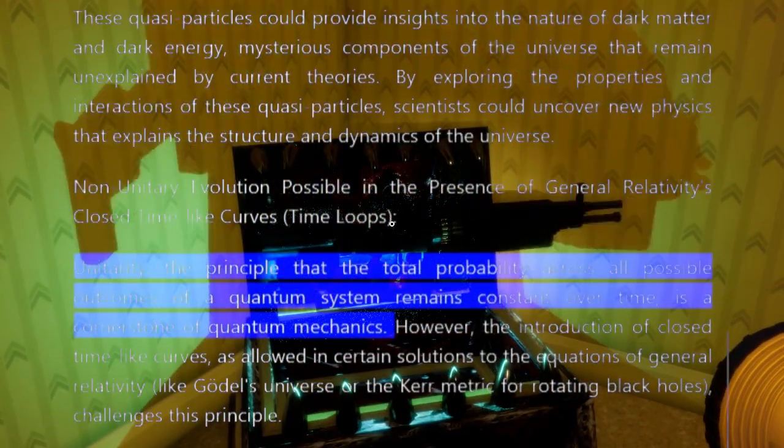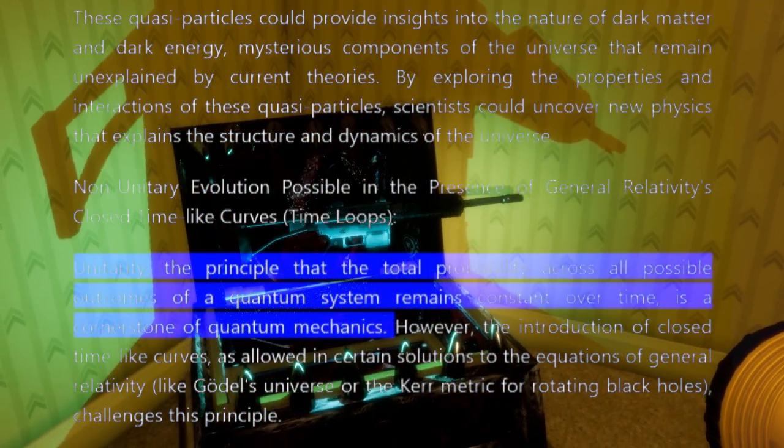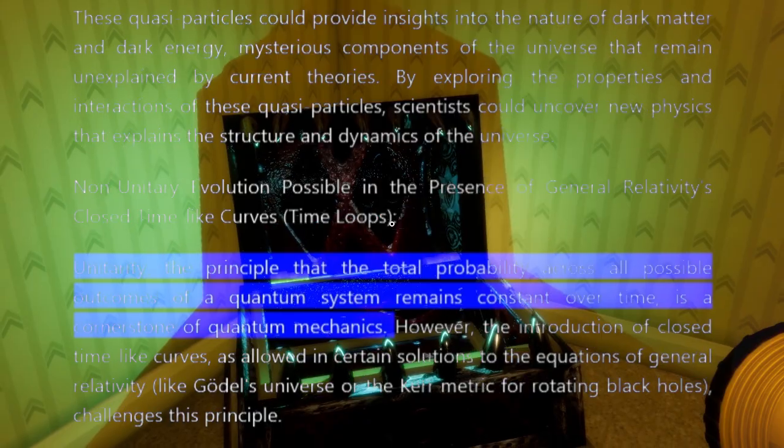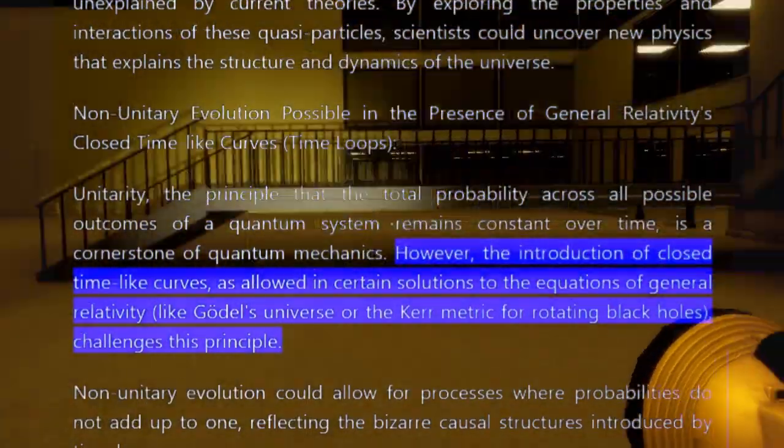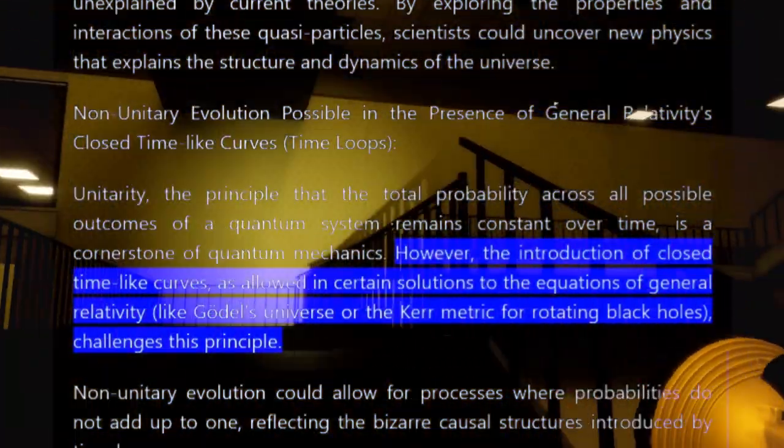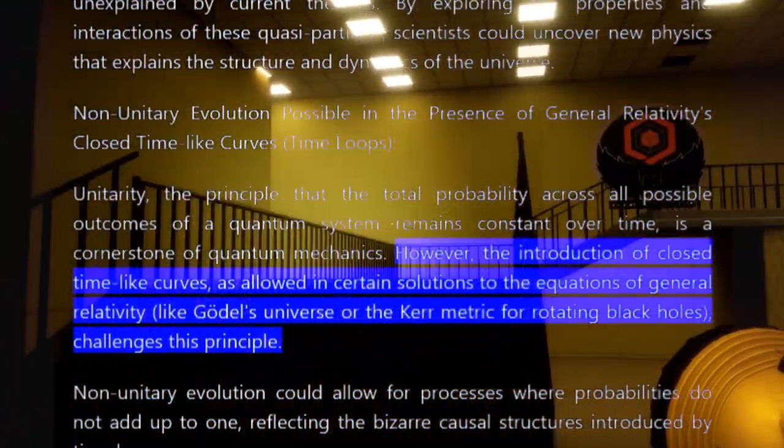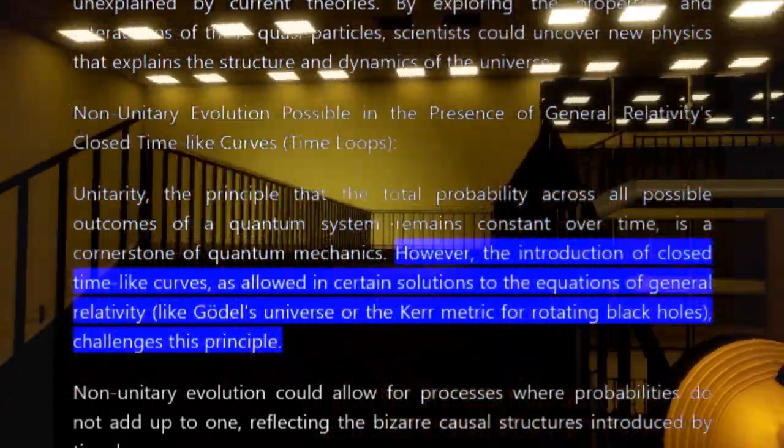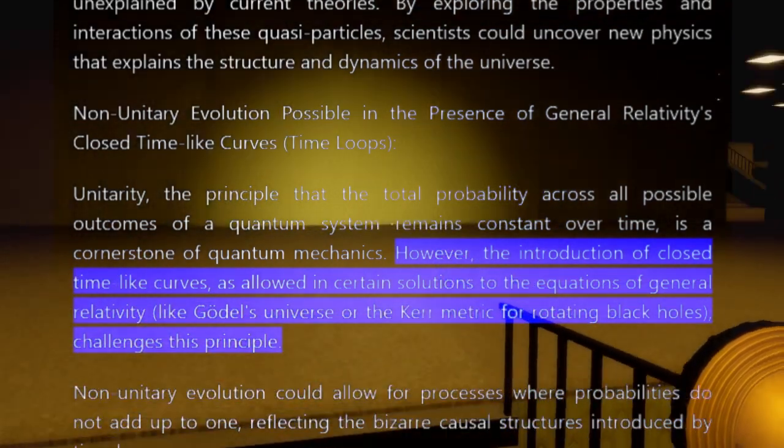Unitarity, the principle that the total probability across all possible outcomes of a quantum system remains constant over time, is a cornerstone of quantum mechanics. However, the introduction of closed time-like curves, as allowed in certain solutions to the equations of general relativity, like Gödel's universe or the Kerr metric for rotating black holes, challenges this principle.